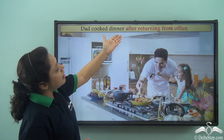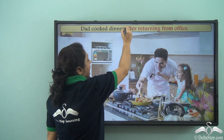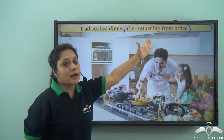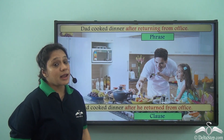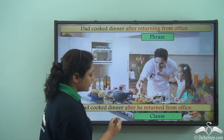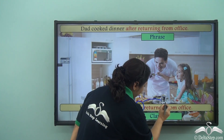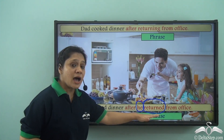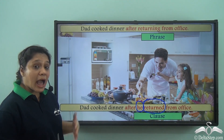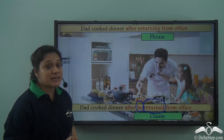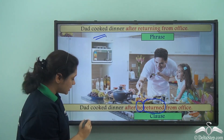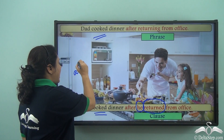Consider 'Dad cooked dinner after returning from office.' Here 'after returning from office' is a group of words which does not have any subject doing a verb, so this is a phrase. And if we write the same sentence as 'Dad cooked dinner after he returned from office,' then we have the subject 'he' and the verb 'returned,' so this group of words is a clause. In both cases, the phrase and the clause are telling you about the time when dad cooked dinner — they modify the verb 'cooked' and are acting as an adverb.